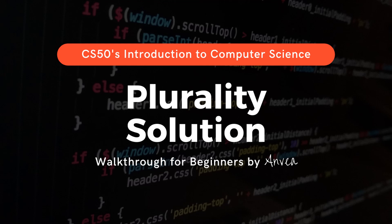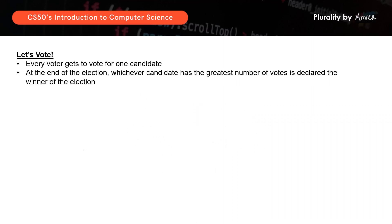Hi everyone! For today, we'll be working on a solution for problem set 3, which is plurality. In this problem set, each voter will get to vote for one candidate. At the end of the election, whichever candidate has the greatest number of votes is declared the winner. The system should then print the name of the winner. If there is more than one candidate with the highest vote count, the system will print all their names.